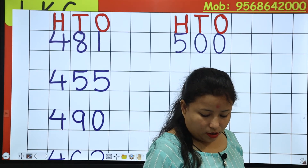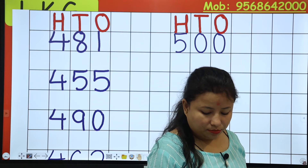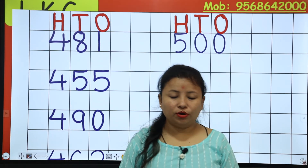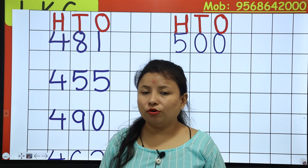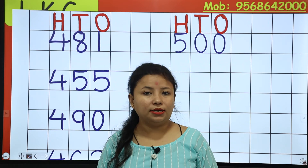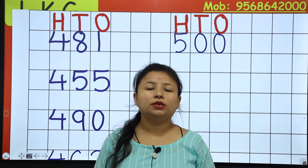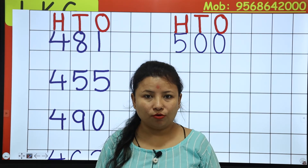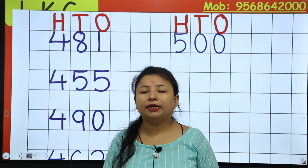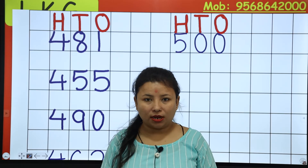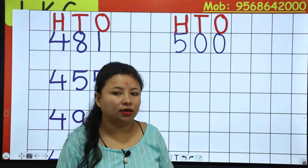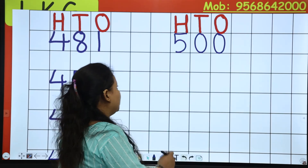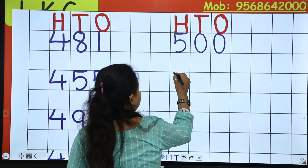Now the next number is 499. 499: 400 it means 4, 90 it means 9, and again 9. 499.